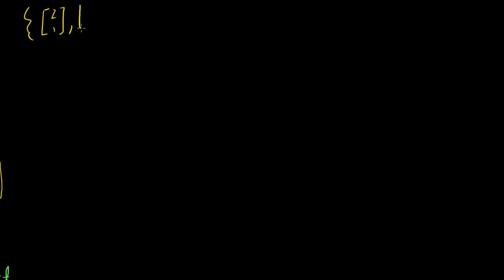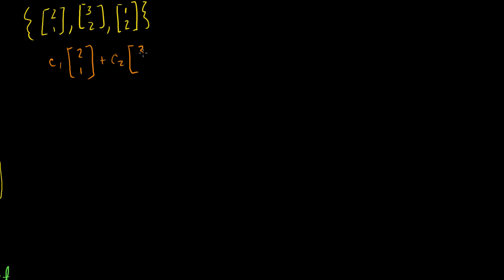For the next example, let's say I have the set of vectors: [2, 1], [3, 2], and [1, 2]. Are these linearly dependent or linearly independent? I go through the same process using the theorem I proved earlier. In order for them to be linearly dependent, there must be some weights c1 times [2,1] plus c2 times [3,2] plus c3 times [1,2] that equal the zero vector. If one of these constants is non-zero, we have a linearly dependent set.